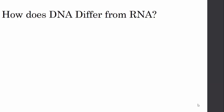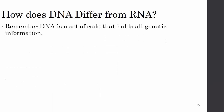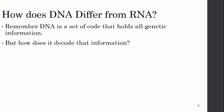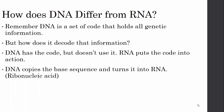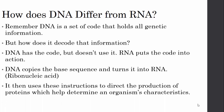So how does DNA differ from RNA? Well, DNA is a set of code that holds all your genetic information. But how does it actually decode that information? DNA has the code, but it doesn't use it. RNA puts the code into action. DNA copies the base sequence and turns it into RNA, which is a ribonucleic acid. It then uses these instructions to direct the production of proteins, which help determine an organism's characteristics.